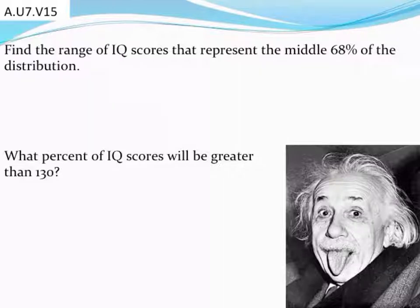To make some estimations about certain different percentages or certain different sections of this graph. And so this question now says, find the range of IQ scores that would represent the middle 68% of the distribution. Well, if you check in your notes,